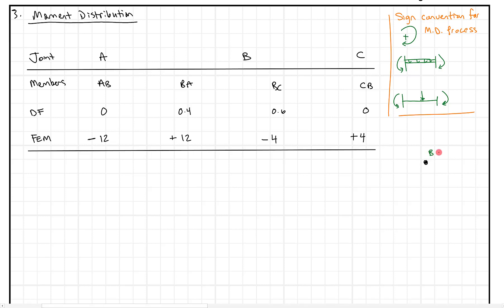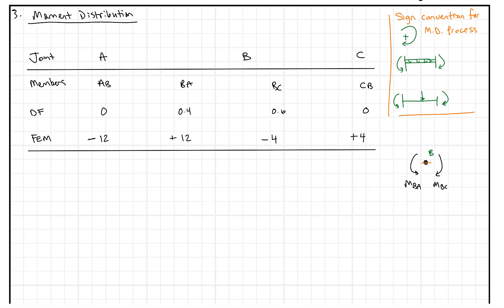At point B, we know that internally there's going to be some moment BA, and on the other side some moment BC. We've been told that these moments assume joint B is fixed — no rotation, perfectly locked down and rigid. With that assumption, moment BA is 12 kip-feet and moment BC is 4 kip-feet. Hopefully you're starting to see a problem, because when we sum the moments at point B — 12 minus 4 — that doesn't equal zero.